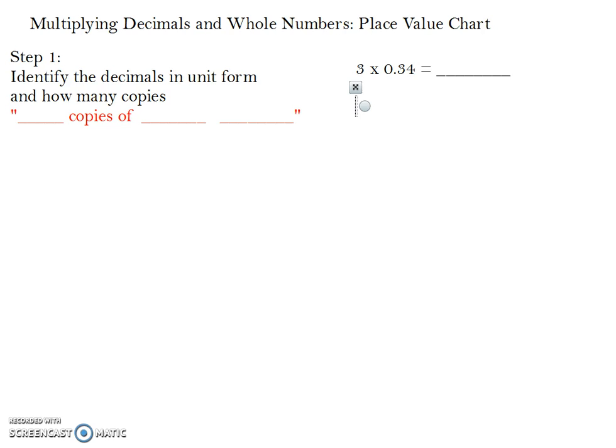The first step is to identify the decimal in unit form, telling how many you have of each place value, and then how many copies of each place value you have. One way that we can think about doing this is filling in the sentence frame, blank copies of blank. In this case, since we are multiplying by 3, we have 3 copies of 3 tenths, since the 3 is in the tenths place, and 4 hundredths.